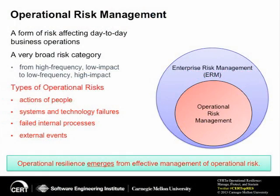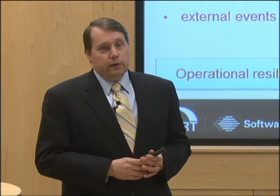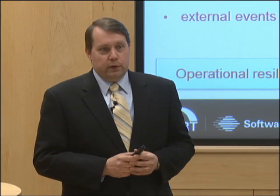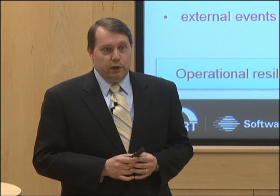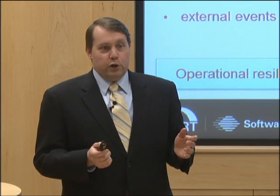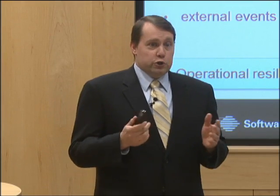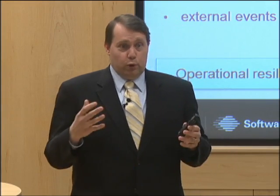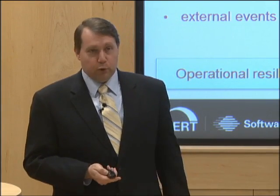We have four types of operational risks: actions of people, systems and technology failures, failed internal processes, and external events. These make up the operational risk management space, which is a subset of enterprise risk management. Operational resilience is what we call an emergent property — it comes forth from the effective management of those operational risks.